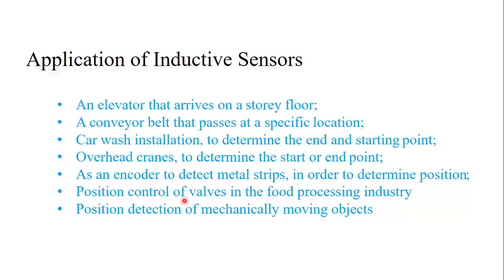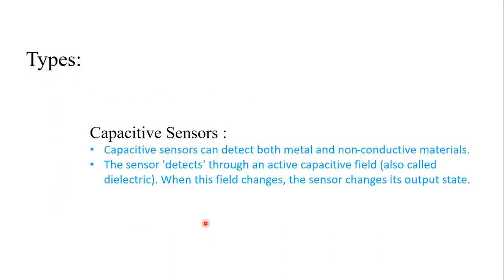Now let's move to capacitive sensors. Capacitive sensors can detect both metallic and non-conductive materials. Non-conductive materials include solids and liquids. The operation principle of the capacitive sensor is that it emits an electric field. If any object is nearby, this electric field undergoes changes, and these changes are detected by the capacitive sensor — that's how it operates.